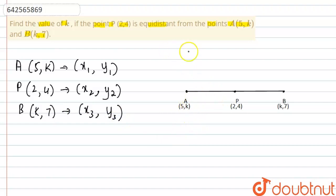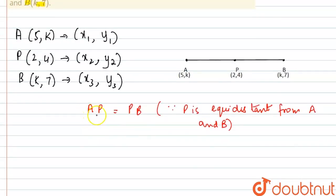So here they have said in the question that the point P is equidistant from A and B. So therefore we can say AP is equal to PB and the reason is since P is equidistant from A and B. Now we can find AP and PB using the distance formula.